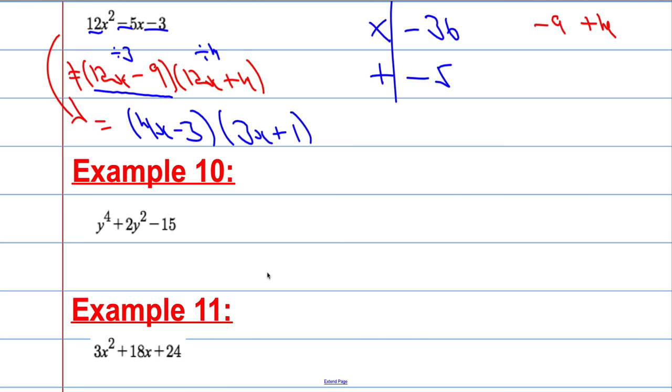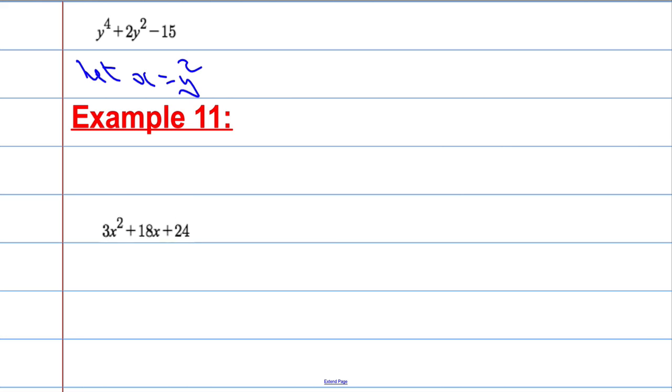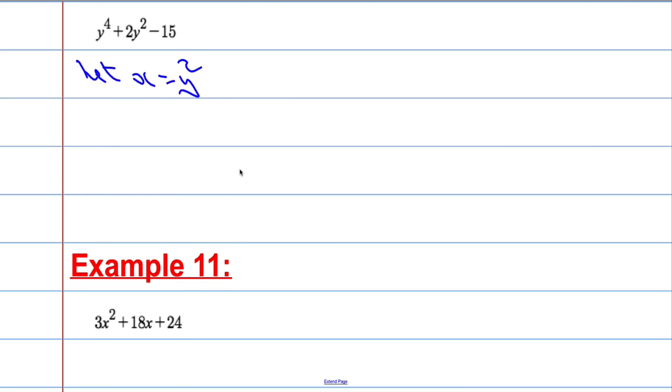This example here, it looks like it's quadratic, but it's not quite. But what I can do is, I can help factorise this by saying, let's say, let x equal y squared. So if x equals y squared. If x equals y squared, what do I have here? This, then, would become x squared plus 2x minus 15. And now I can factorise this.